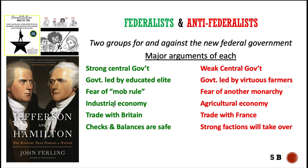Federalists encouraged trade and an industrial economy, not so much one based on slavery. Anti-Federalists encouraged a weak central government. Many Anti-Federalists couldn't picture going back to a world where one central government tells everybody what to do — they feared the central government having too much power. Many Anti-Federalists, including Thomas Jefferson, favored an agricultural economy. People from very rural areas like Virginia would have been closer to Anti-Federalists, and that is because they had an agricultural economy and would have been more in favor of keeping the Articles of Confederation rather than throwing them out.